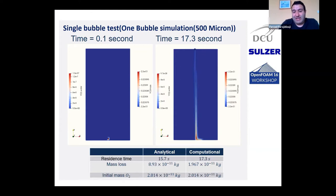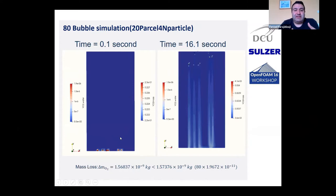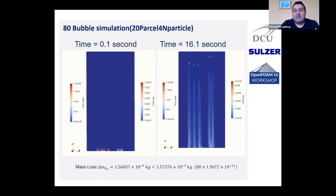As the bubble rises, the trace of oxygen inside it becomes lower and lower; at the start it has high oxygen concentration giving red regions. We repeated the test with more bubbles: 80-bubble simulation with 20 parcels, each containing four particles. The dissolved oxygen traces on the right-hand side show results almost identical to 80 individual single-bubble tests, confirming the model's consistency.